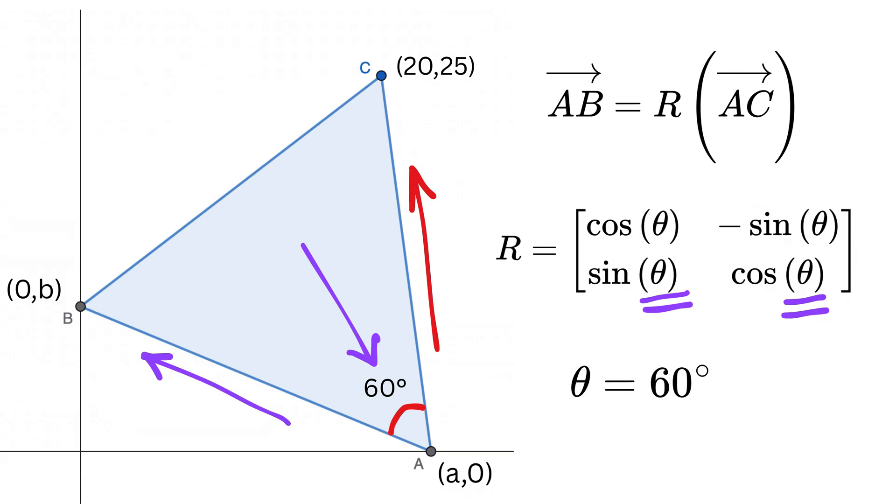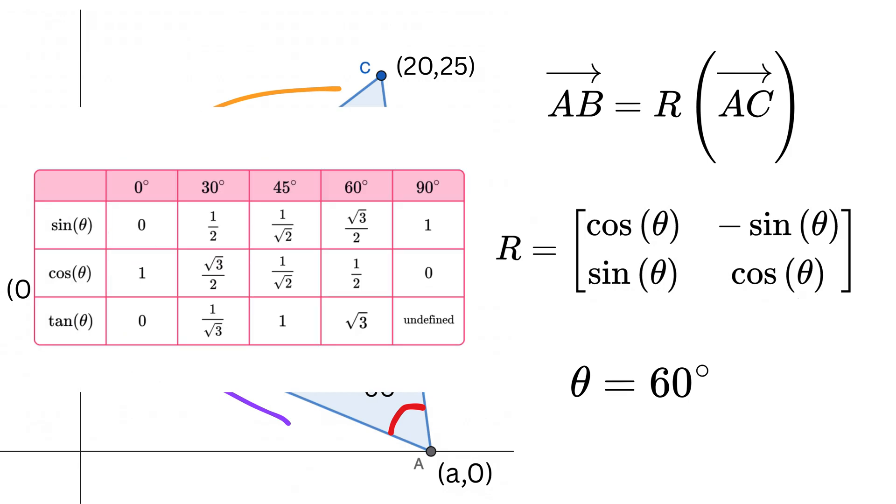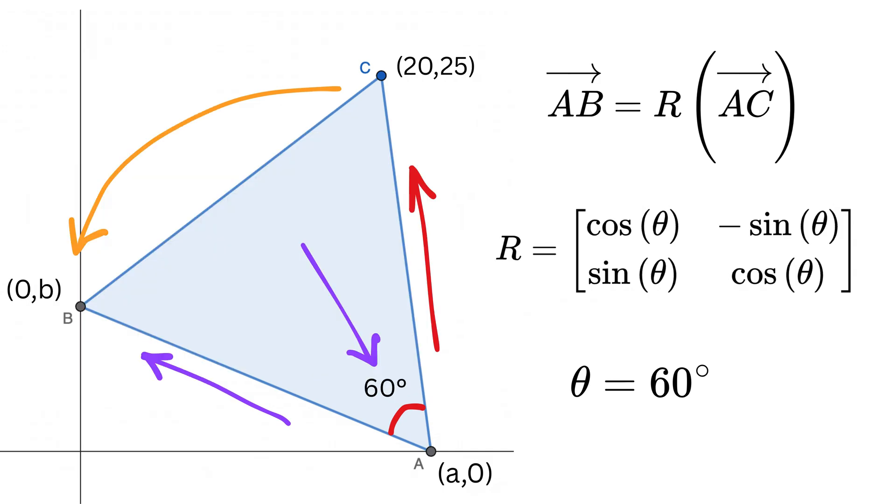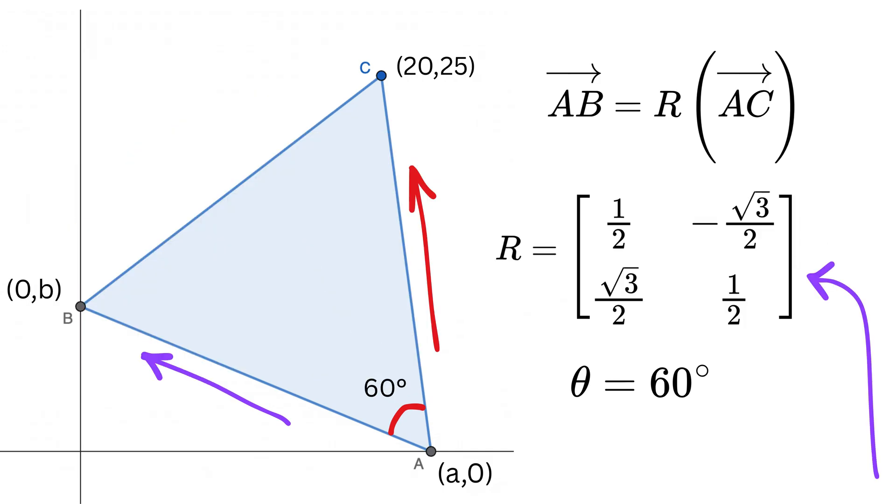So, in our case, theta is positive 60 degrees because we are rotating vector AC counterclockwise. Using a standard trigonometric table, we have cos(60°) equal to 1/2 and sin(60°) equals √3/2. So, the rotation matrix becomes like this.